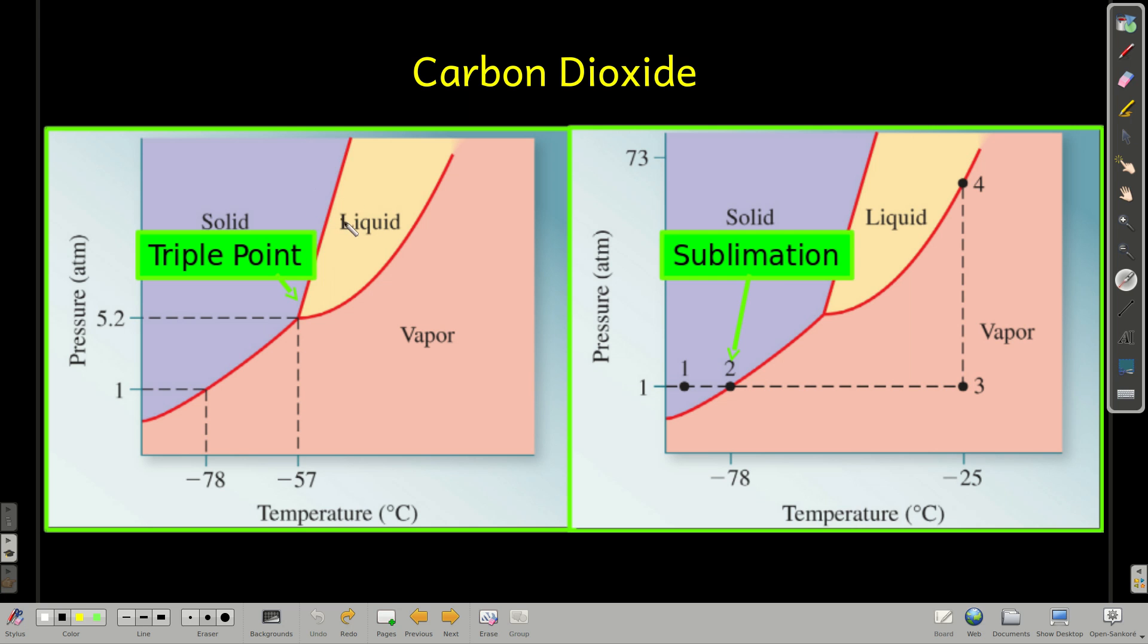If you keep the pressure the same, you would increase the temperature, then you would go across this line and melt it at a higher temperature.